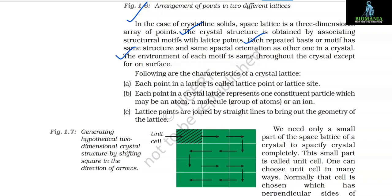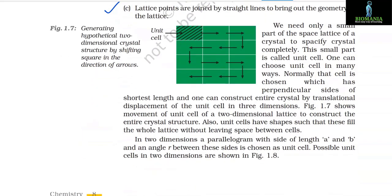Characteristics of a crystal lattice: (a) each point in a lattice is called a lattice point or lattice site; (b) each point in a crystal lattice represents one constituent particle — an atom, molecule, group of atoms, or ion; (c) lattice points are joined by straight lines to bring out the geometry of the lattice. We need only a small part of the space lattice to specify the crystal completely — this small part is called the unit cell. One can choose a unit cell in many ways; normally the cell chosen has perpendicular sides of shortest length.